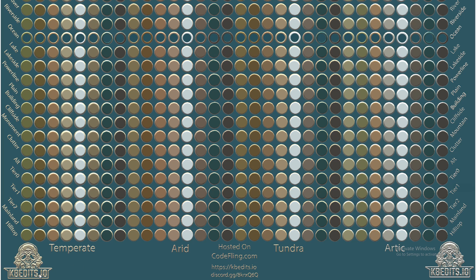This map is made by Bren from KB Edits and you can find it on Codefling. I'll show you exactly where you can download it in a second. First of all there are four biomes: the temperate, the arid, the tundra and the arctic.